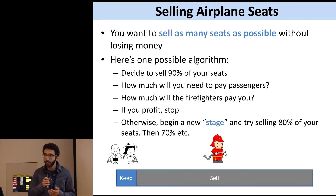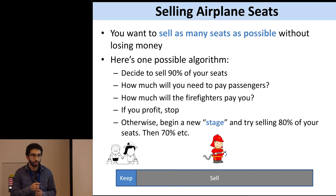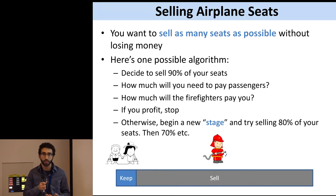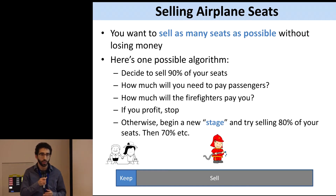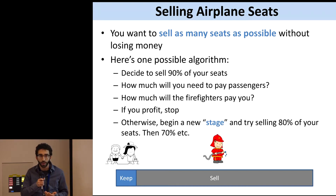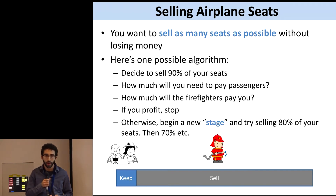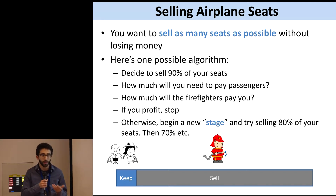The goal here is ideally to sell as many seats as possible without losing money. One algorithm you could use is to decide you're going to sell 90% of your available seats, figure out how much it's going to cost you to pay off passengers assuming you only have 10% of your seats available, then ask the firefighters how much they're willing to pay for those 90% of seats. If they're going to pay you more than you're paying off the passengers, you can stop the algorithm. Otherwise, you try selling fewer seats — like 80% or 70%.